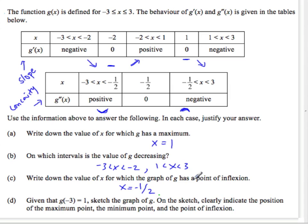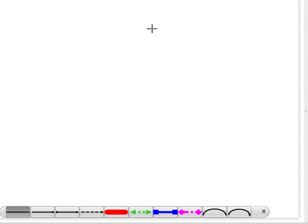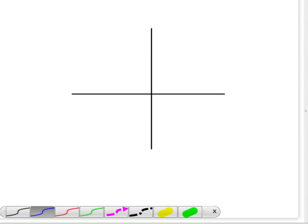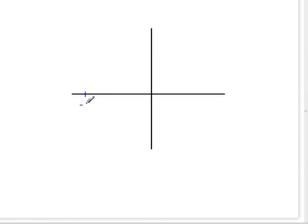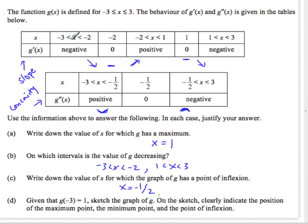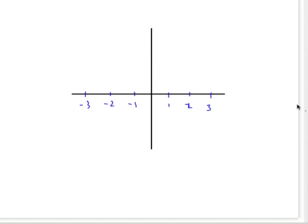And then, let's sketch the graph. So, we have a graph. Negative 3, negative 2, negative 1, 1, 2, 3. Okay. So, the function, you can see here, the function from negative 3 to negative 2 is going down. So, negative 3 to negative 2 is going down.